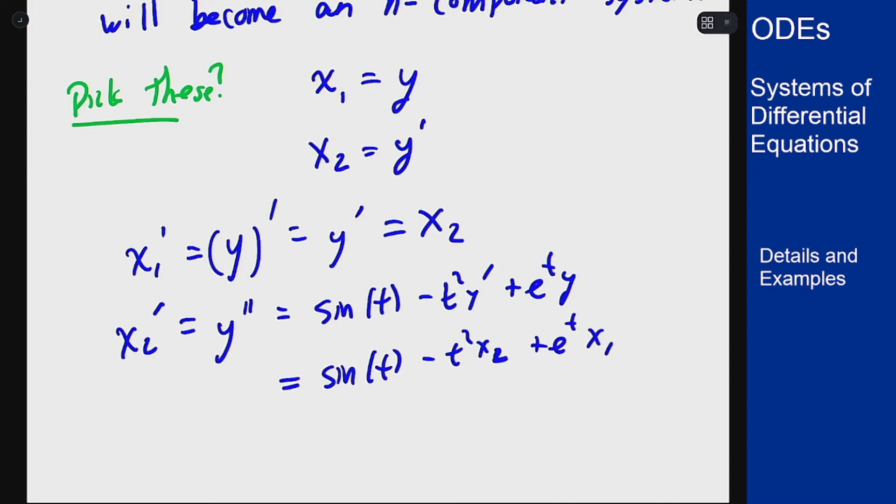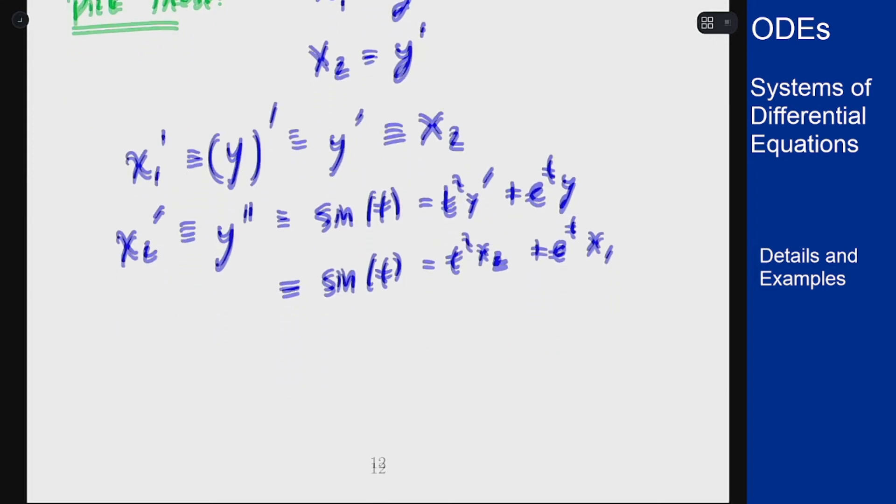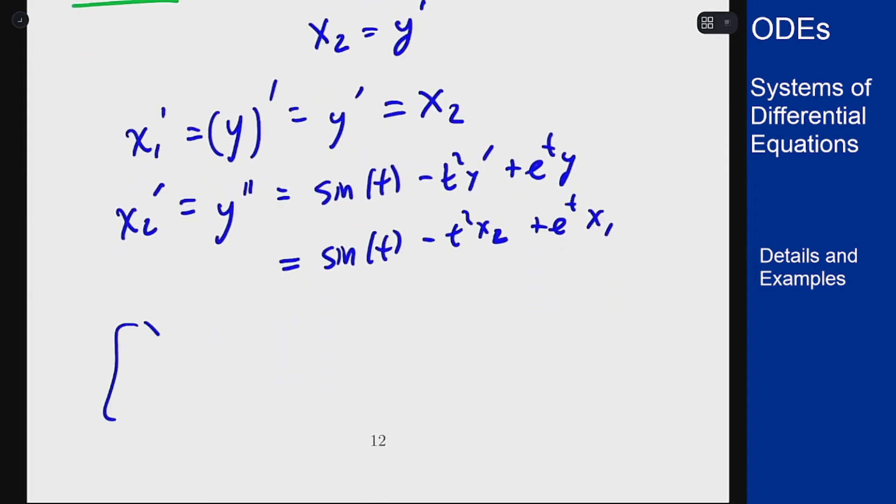So in a sort of matrix-type form, I get that my x1, x2 prime is going to be just x1 prime, x2 prime, is going to be x2 and then sine of t minus t squared x2 plus e to the t x1.